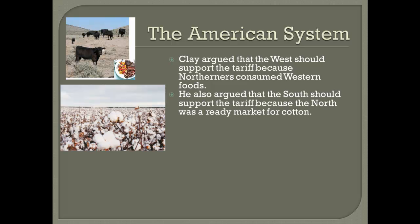When he talked to the Southerners, he told them that they should support the tariff because the North was a ready market for their cotton. Despite the fact that there was a lot of bickering and fighting between the three sections and a lot of jealousy over who was getting special treatment, Congress did enact parts of the American System — though the whole plan was never approved.